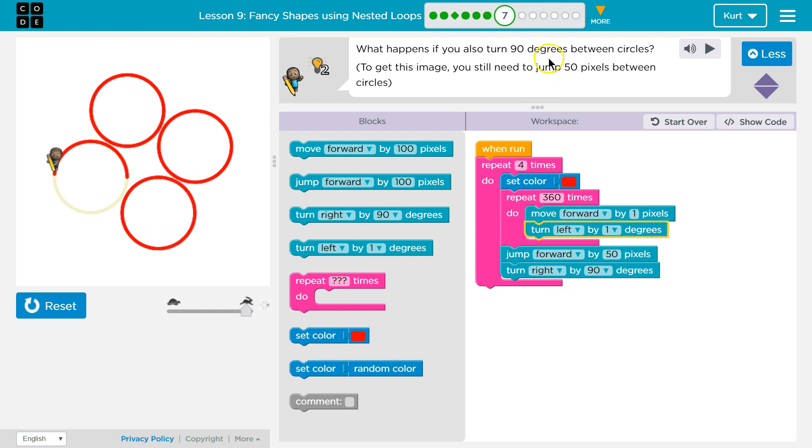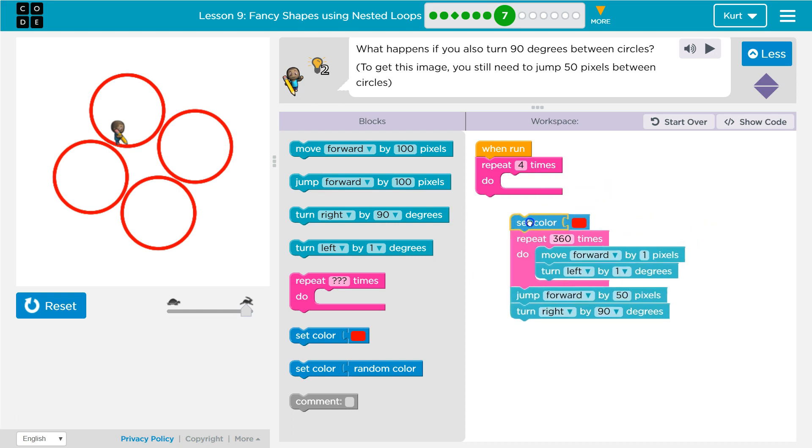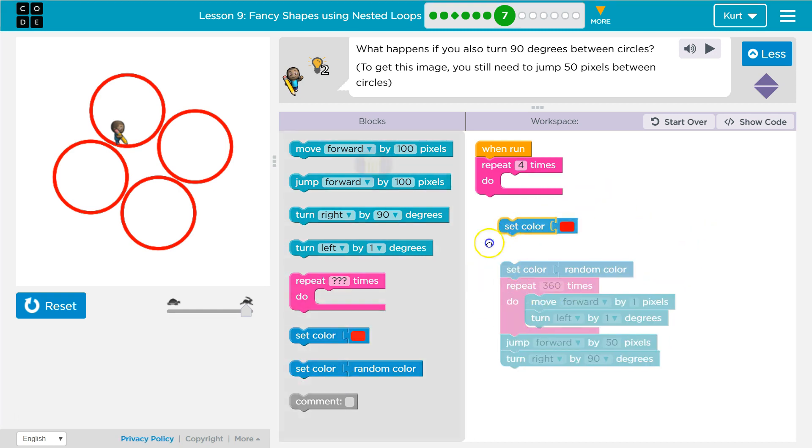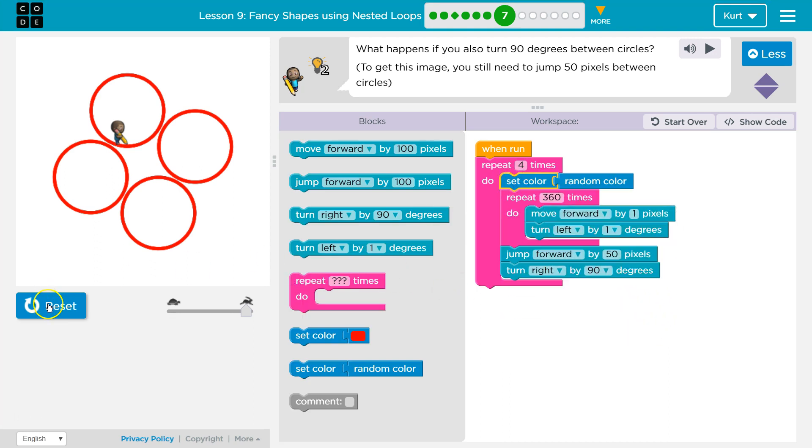Oh, there we go. We need to jump before we turn. I thought that... Okay. So, make sure you jump before you turn. And I don't want them all red. I want random. I was thinking it was the other way. So, one more time. We jump and then turn, which gives the circle a different angle.